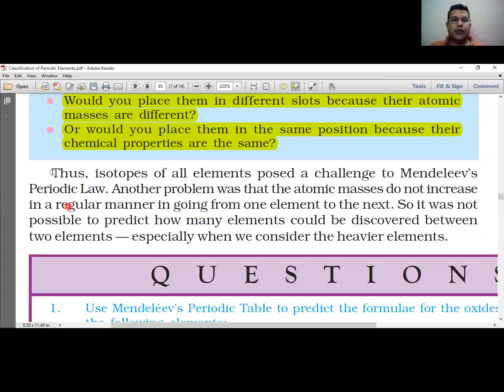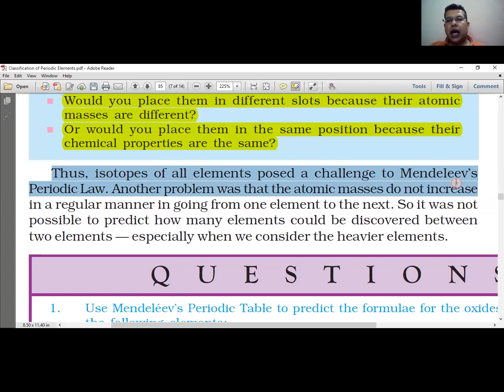Thus, isotopes of all elements posed a challenge to Mendeleev's periodic law. Another problem was that the atomic masses do not increase in a regular manner in going from one element to the next.